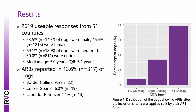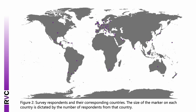After data cleaning, I received 2,619 usable responses from 51 countries. The majority of respondents were female and half were aged 45–64. Among the dogs, 53.5% were male, 69.1% were neutered, and the median age was 5 years. After applying inclusion criteria, ARBs were reported in 13.6% of dogs, most prevalent in Border Collies, Cocker Spaniels, and Labrador Retrievers. The most popular country was the UK with 86.4% of participants, followed by the US with 5.8%, with respondents also from Japan, Sri Lanka, Serbia, and Guatemala.